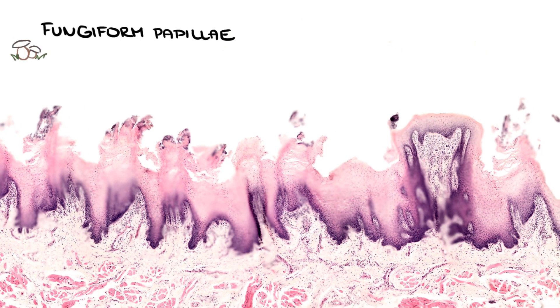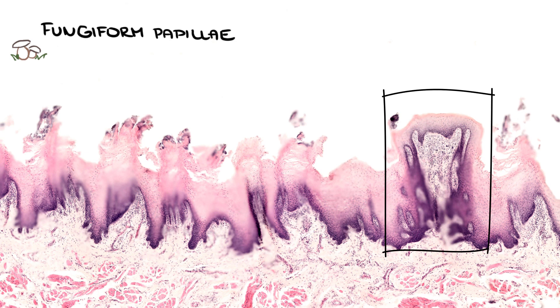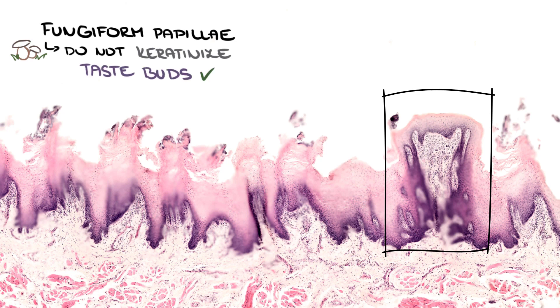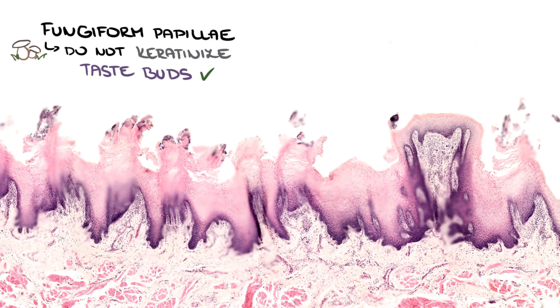Another type of papillae which we can see are fungiform papillae. There is only one in this section. Its cells do not keratinize. We can sometimes find taste buds on these papillae, but unfortunately not in this slide.